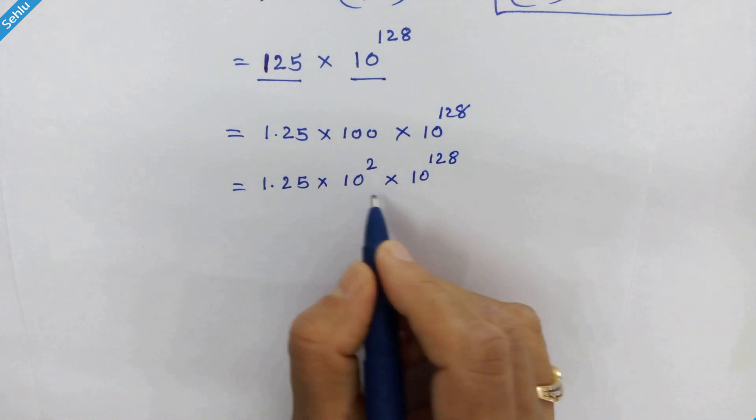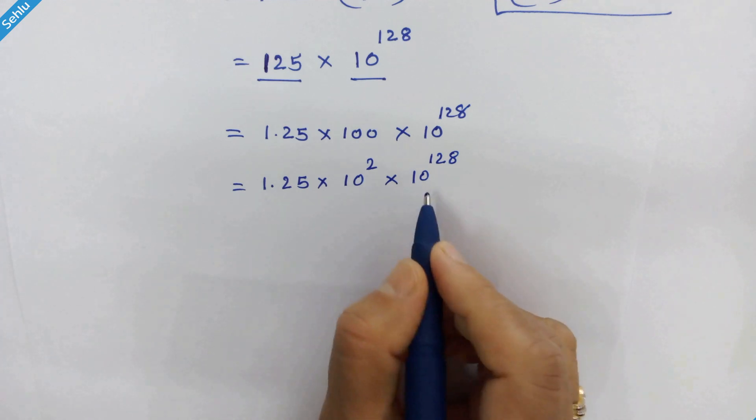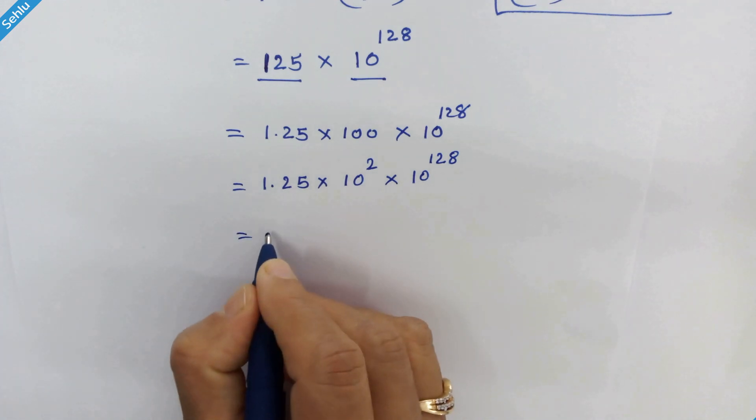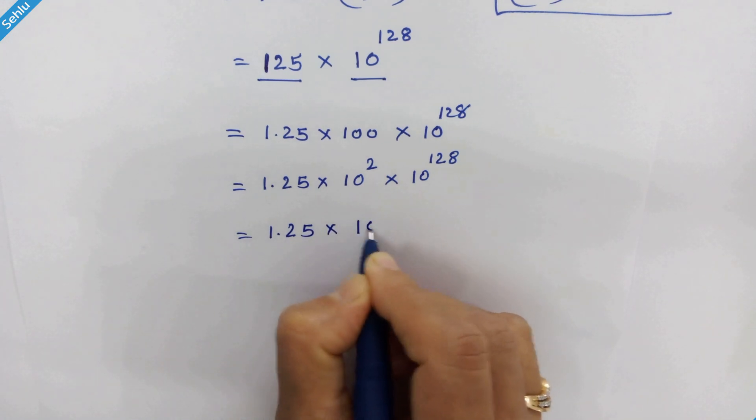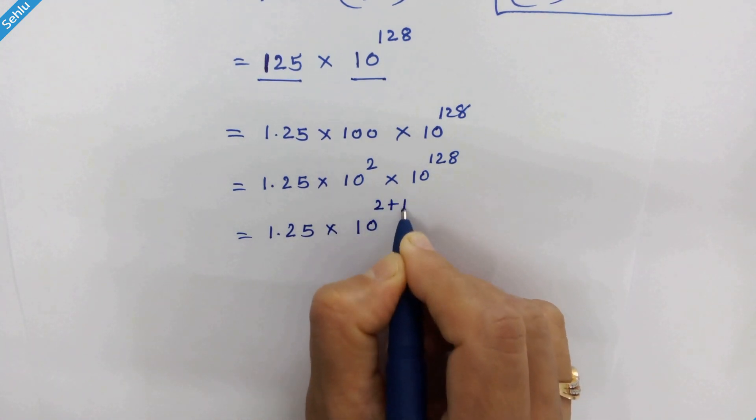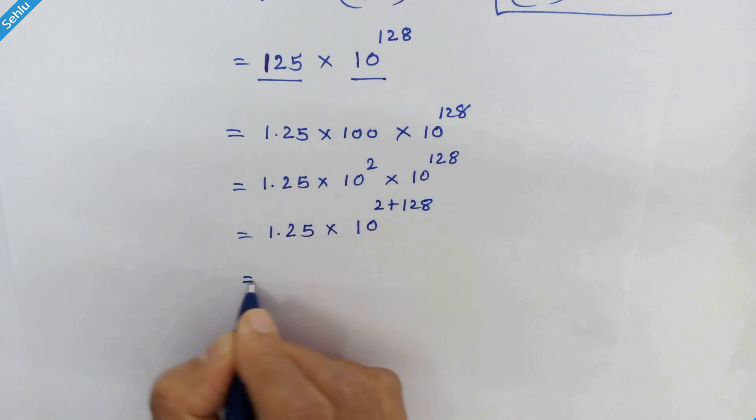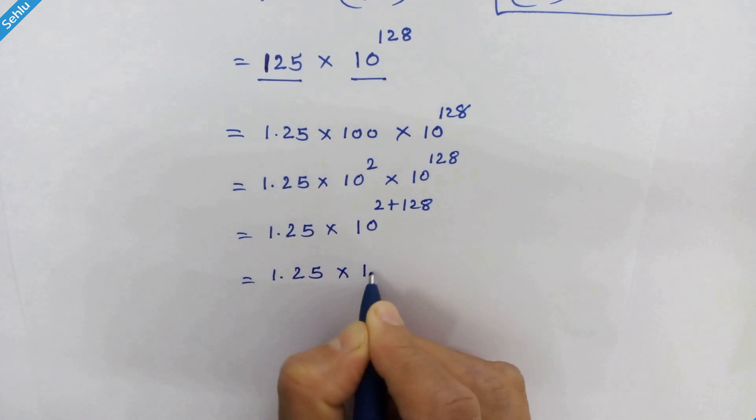We can combine these two because they have same base. So 1.25 times 10 raise to 130.